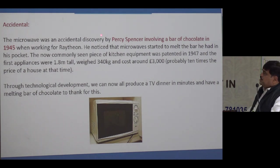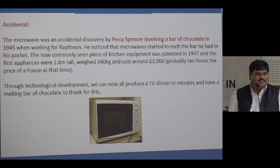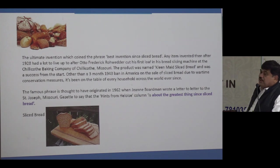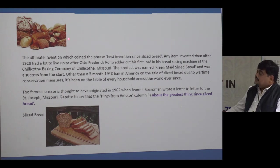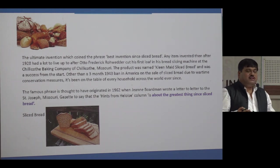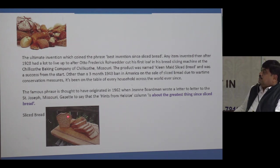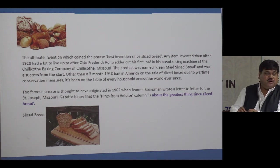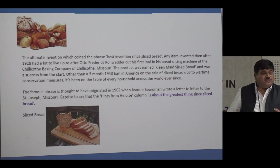Some discoveries are accidental — Percy Spencer discovered the microwave when his chocolate melted while he was walking near microwave equipment. But some innovations are deliberate thinking. Sliced bread, for example, was the biggest innovation of 1928: earlier there was a whole loaf and people didn't know how to portion it without wastage. Somebody thought to slice the bread, take what you want, and store the rest in a polythene bag. It was patented and later a 1962 newspaper article referred to something as the greatest thing since sliced bread.